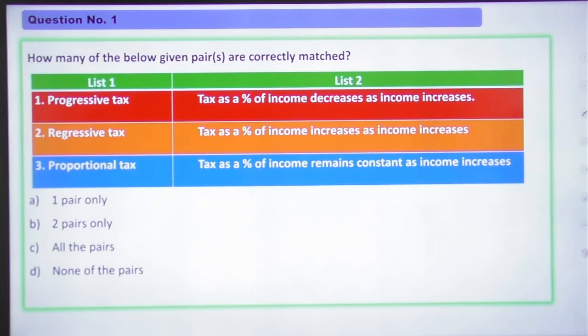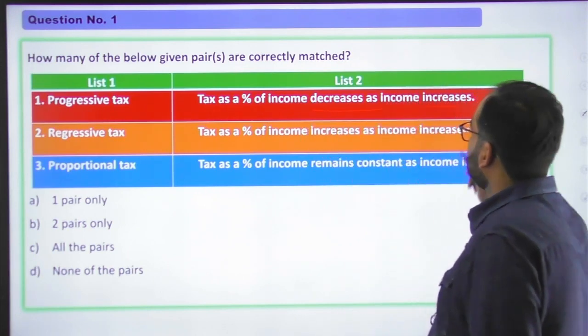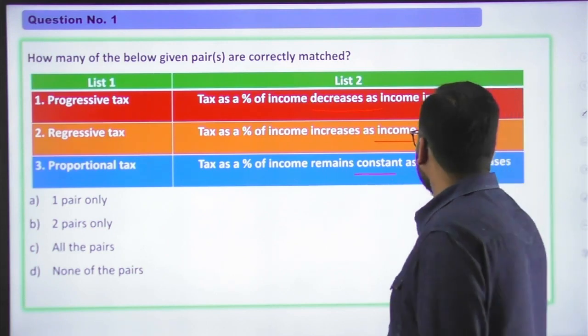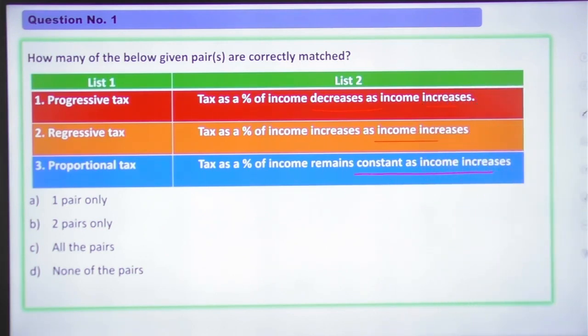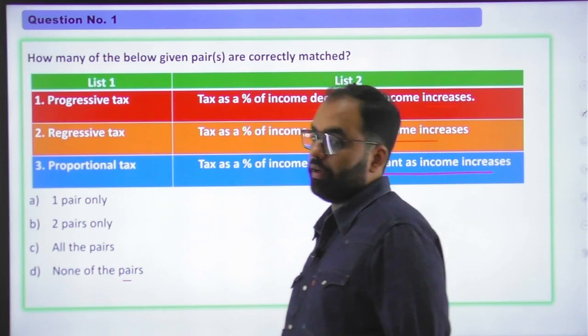How many of the below given pairs are correctly matched? First, progressive tax, i.e. tax as a percent of income decreases as income increases. Second, regressive tax, i.e. tax as percent increases as income increases. And third, proportional tax, i.e. tax as a percent of income remains constant as income increases. One pair only, two pairs only, all the pairs or none of the pairs.